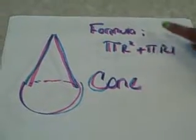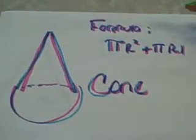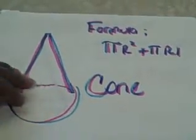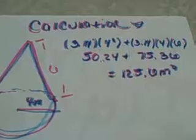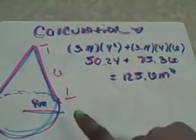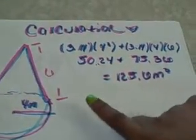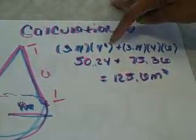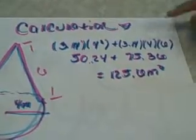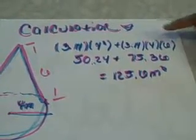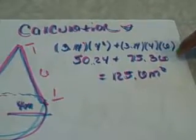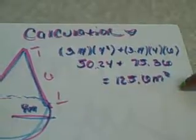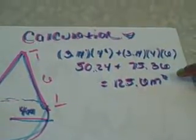The formula for cone is pi times radius squared plus pi times radius times length. The radius is 4 and the height is 6. 3.14 times 4 squared equals 50.24. 3.14 times 4 times 6 equals 75.36, equals 175.125 plus 6 squared.